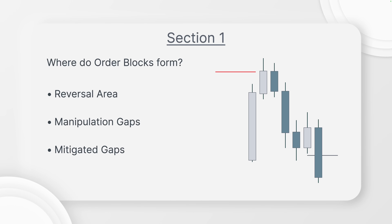The gaps we went over in the previous video — the strongest fair value gaps. On the right side of our screen, we have the red line which is the reversal area. The gap higher, the fair value gap higher, is the manipulation gap. Once we come into that, we create a sharp turn, and we have an up candle coming into that fair value gap that continues lower. That up candle right there becomes the order block. This is exactly where most order blocks will form.